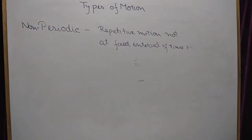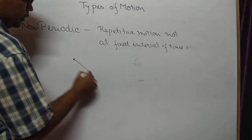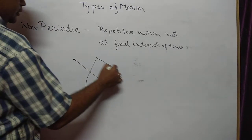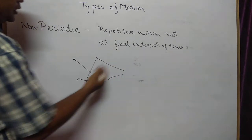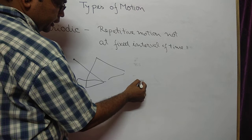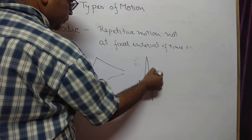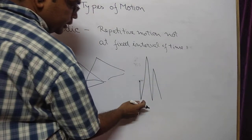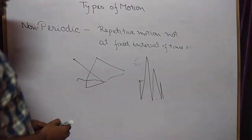For example, a football player running in a haphazard way to reach the goal, then coming back to their own goal post and moving again — this is non-periodic motion. Another example is a bouncing ball: it goes downward then moves upward, comes back, moves upward again, but the interval of time keeps decreasing, so this is also non-periodic motion.